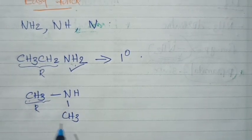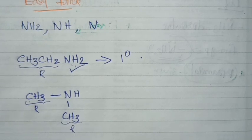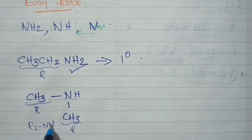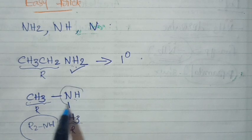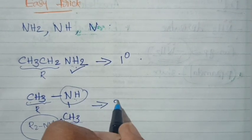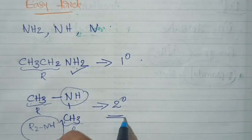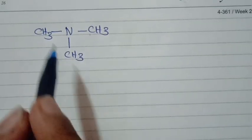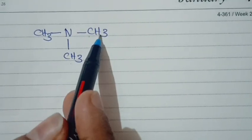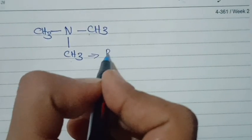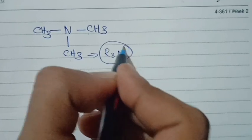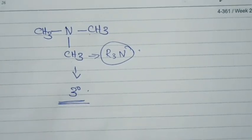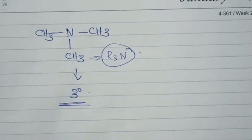We will write R2NH as the general formula for secondary amines. Two CH3 groups form one R group each. The compound contains NH — therefore this is a secondary amine. For a tertiary amine example: CH3-N-CH3-CH3, that is three R groups attached to N — of the form R3N. So NH2 is primary, NH is secondary, and N is tertiary.